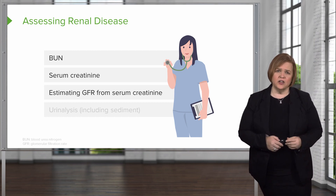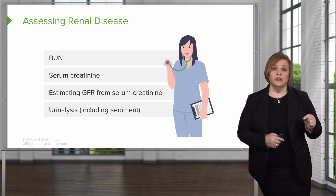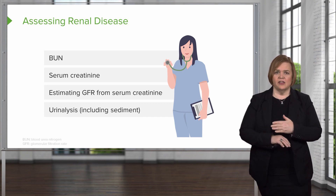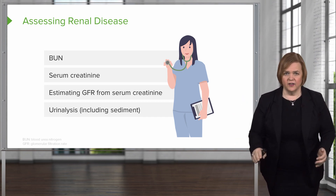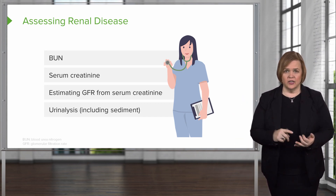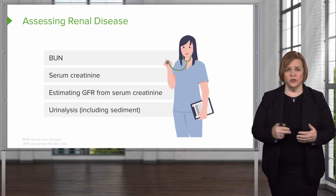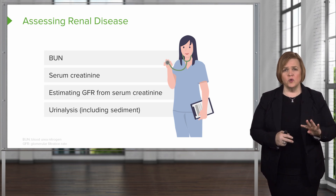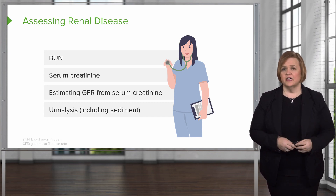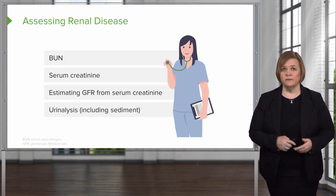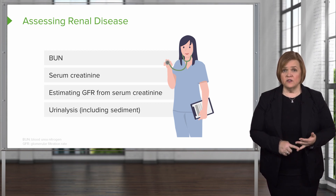The GFR is a really good indication of kidney function. And lastly, a urinalysis — including sediment, which is the whole shebang. We're looking at it visually, under a microscope, doing all kinds of tests on this urine to see how the kidneys are functioning. So these are four major tests: BUN, serum creatinine, estimating the GFR from the serum creatinine, and urinalysis.